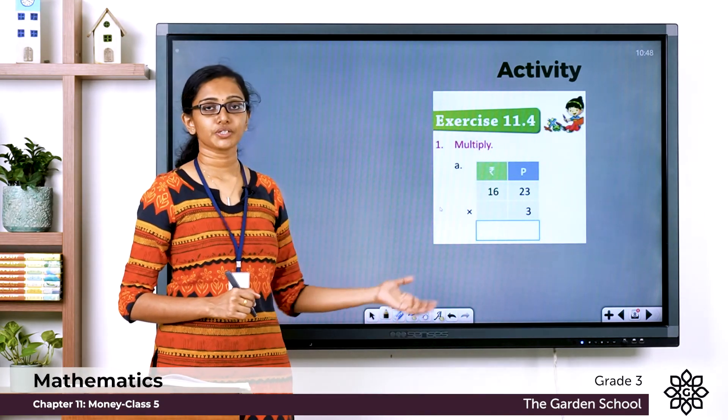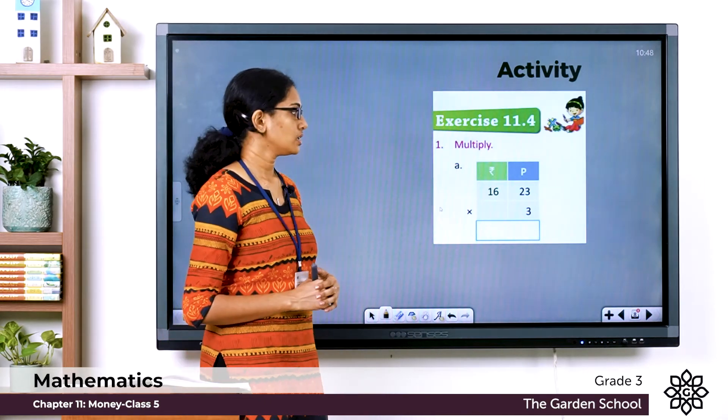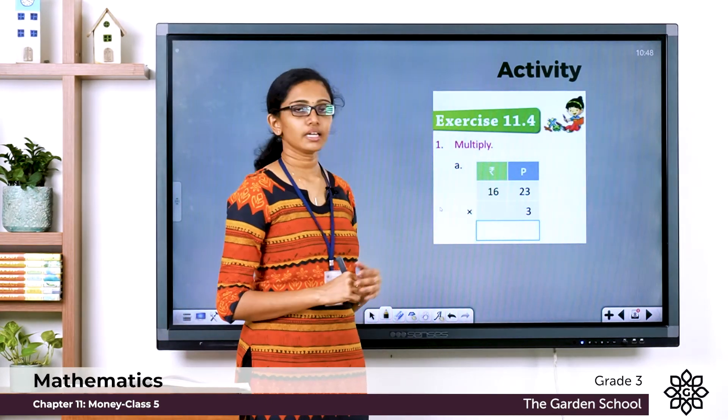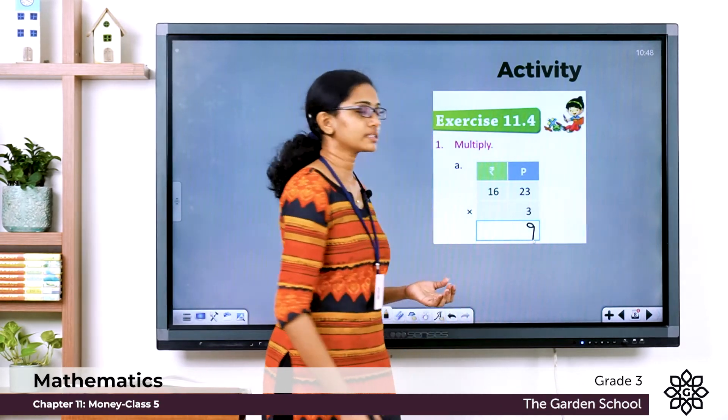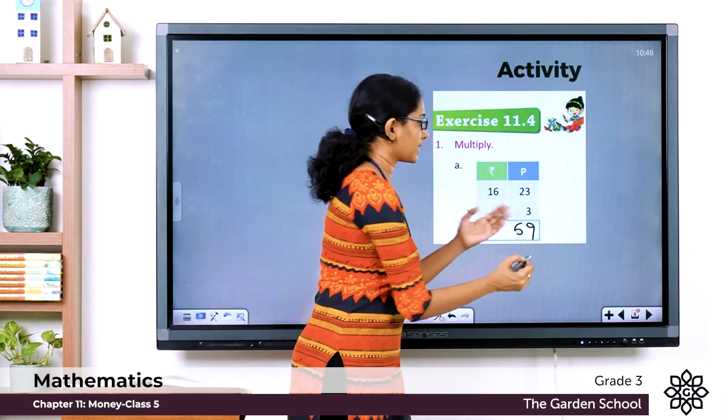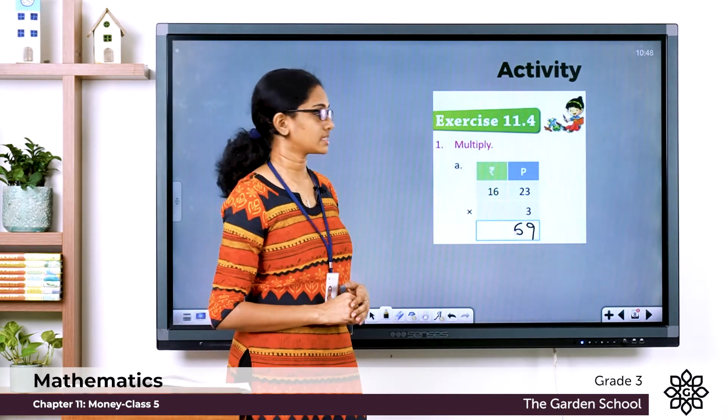Starting the multiplication in the paisae column, here we have 3 into 3, 9. So let's write 9 here. Now 3 into 2 is equal to 6. So here in the paisae column we have 69 paisae.